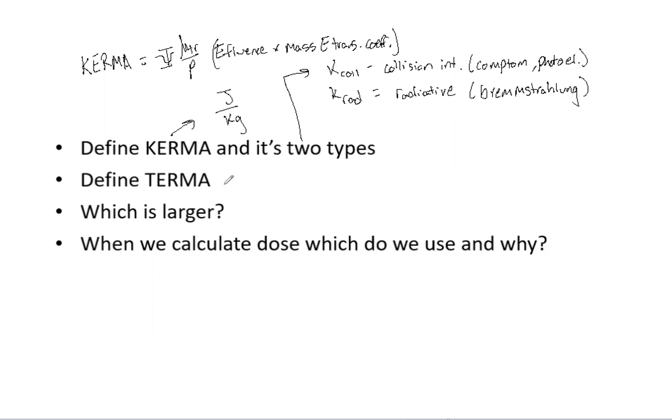So now what is Terma? So Terma is the total energy released in matter. And so the Terma is similar to the Kerma. And that again is the energy influence. And that now is multiplied instead of the mass energy transfer coefficient, the mass attenuation coefficient.